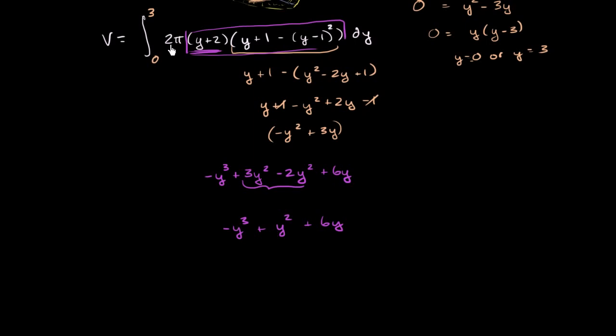We can take the 2 pi out of the integral sign. So let's do that. We're integrating from y equals 0 to y equals 3 dy. And I took the 2 pi out here. And that is equal to our volume.